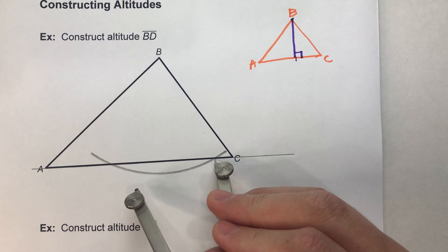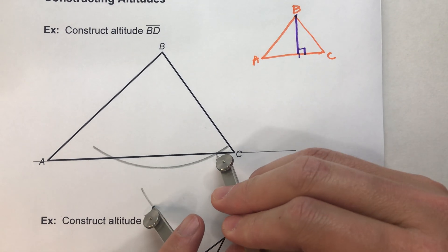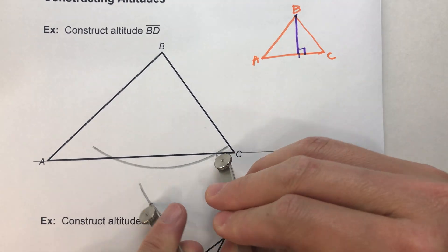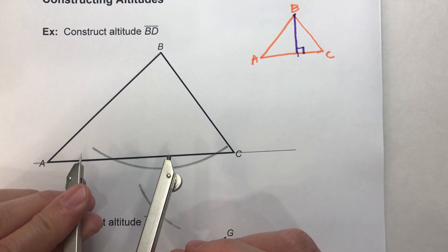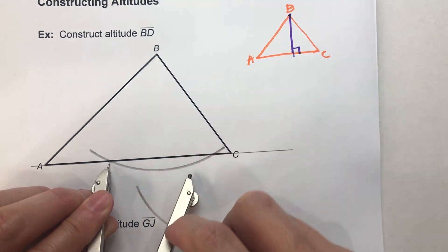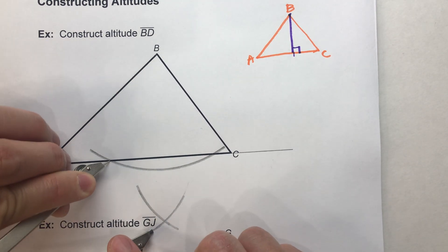But from here, I'm going to take my compass and swing an arc down below on one side and then using that same compass setting on the other side and swing an arc.